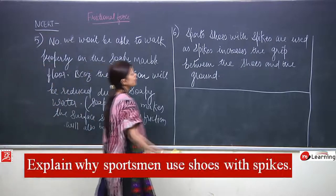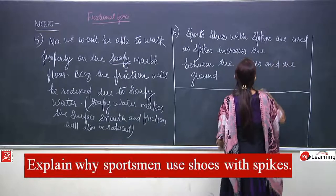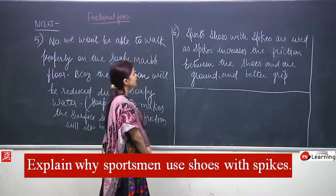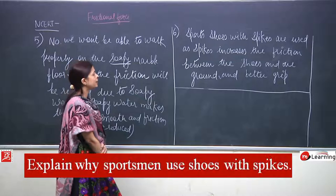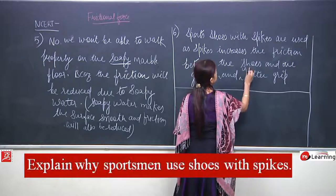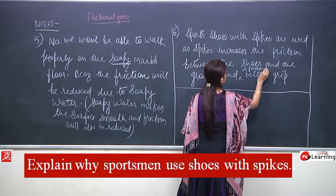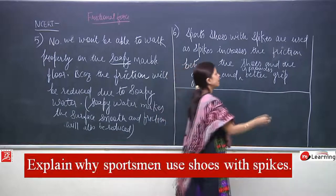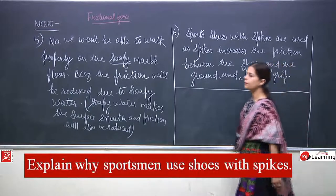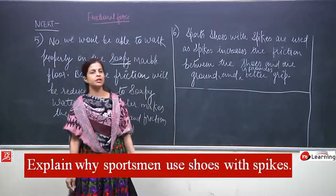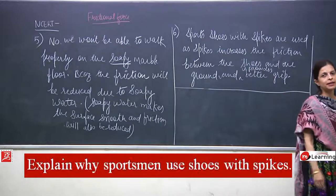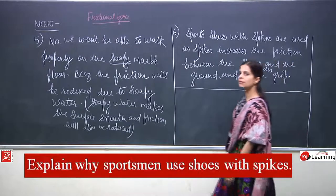Sports shoes with spikes are used as spikes increase the friction between the shoes and the ground, and it provides better grip. Spikes are there to give better grip so that the person does not fall and can run and play easily. That was question number 6.